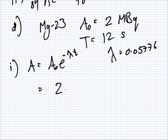So lambda is 0.05776. So this will be 2 times 10 to the 6th times e to the minus 0.05776. How many seconds? 60 seconds. Actually, that was only one way to do it.